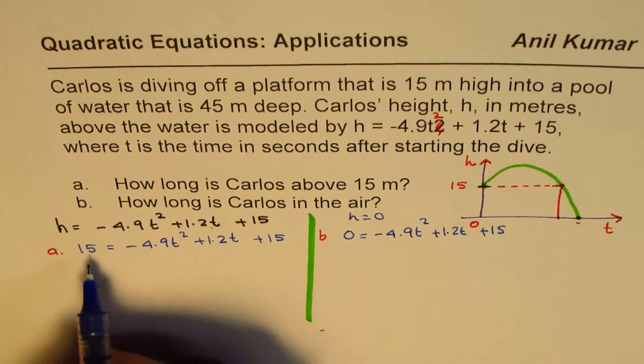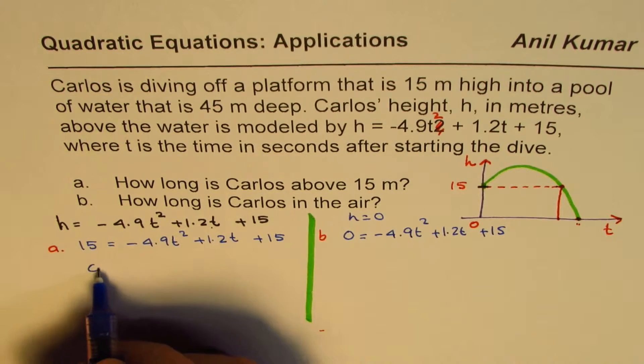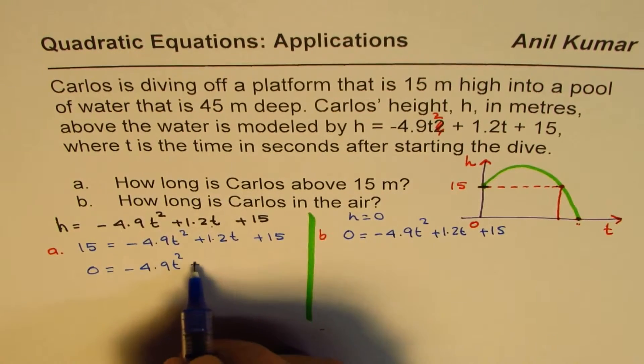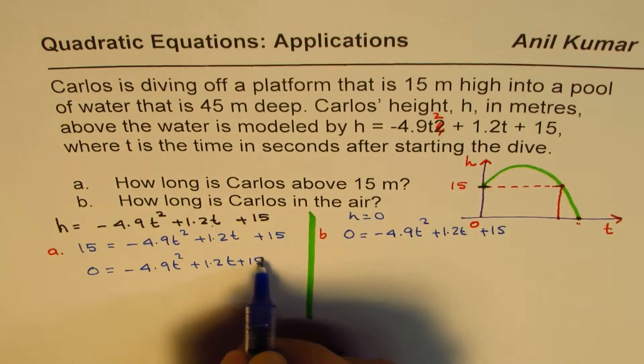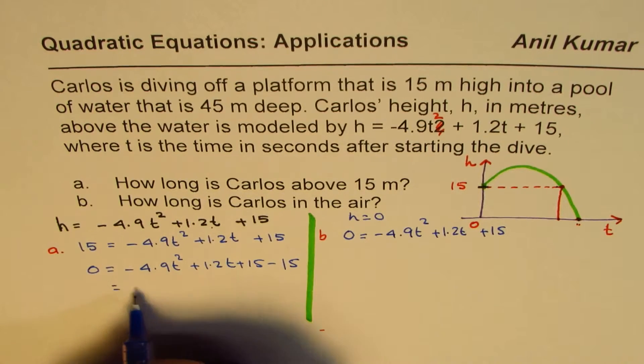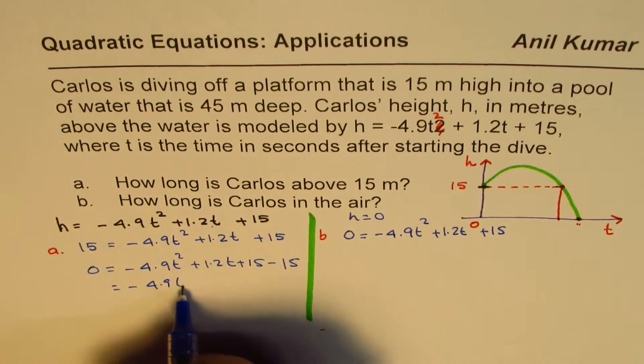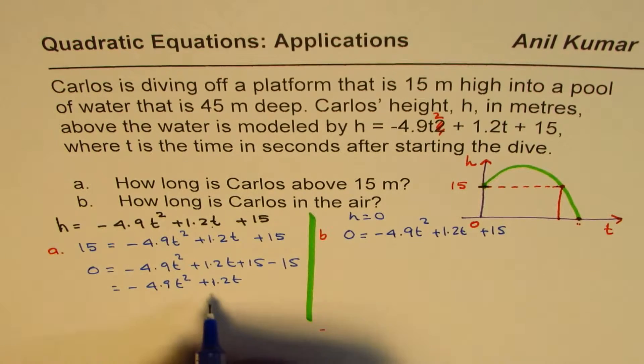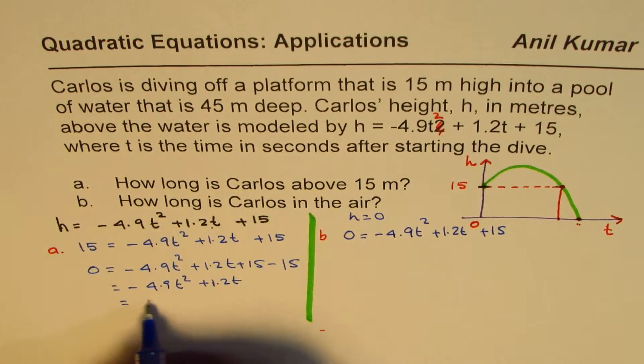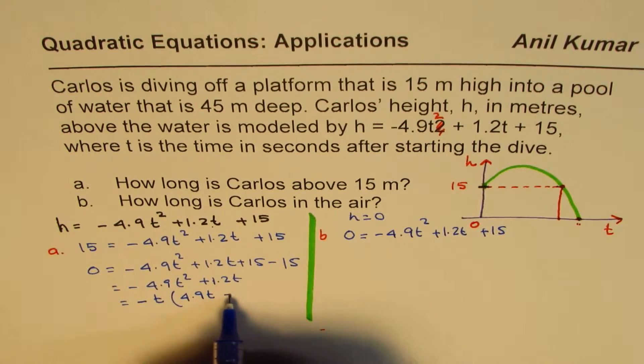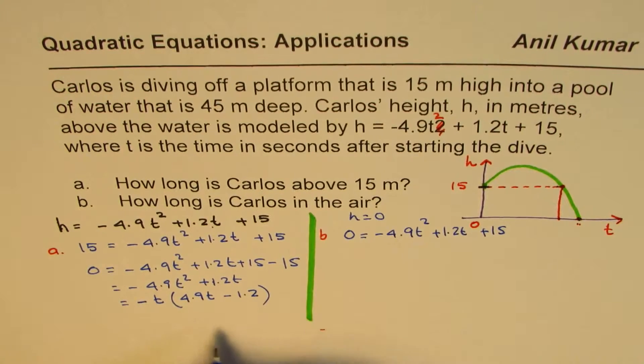Let's solve the first one. Taking 15 to the other side, 0 equals minus 4.9t squared plus 1.2t plus 15 minus 15. Same height, they cancel off. So we have minus 4.9t squared plus 1.2t. Now we can factor t. Let me factor minus t. Then I get 4.9t minus 1.2.